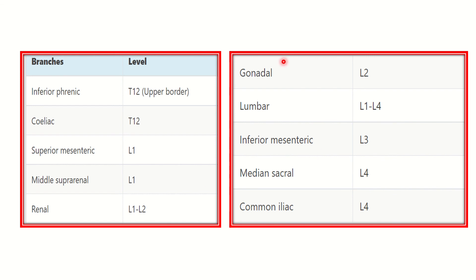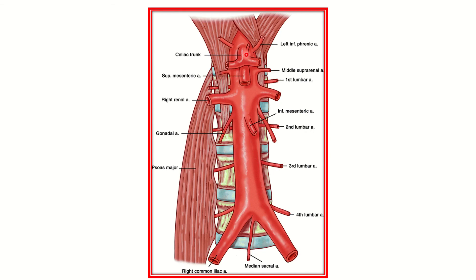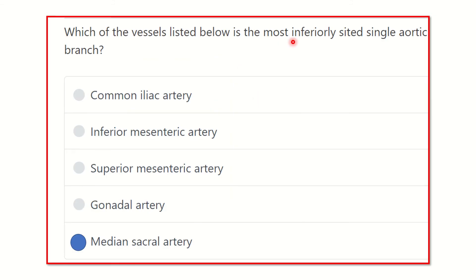Almost all of these vertebral levels in the slide are very important and we have to remember all the levels. It is relatively easy if we see here — correlate the branch with the vertebral level and it will be very easy to memorize and answer that question. So our final answer: the most inferiorly seated single aortic branch is the median sacral artery. Thank you.